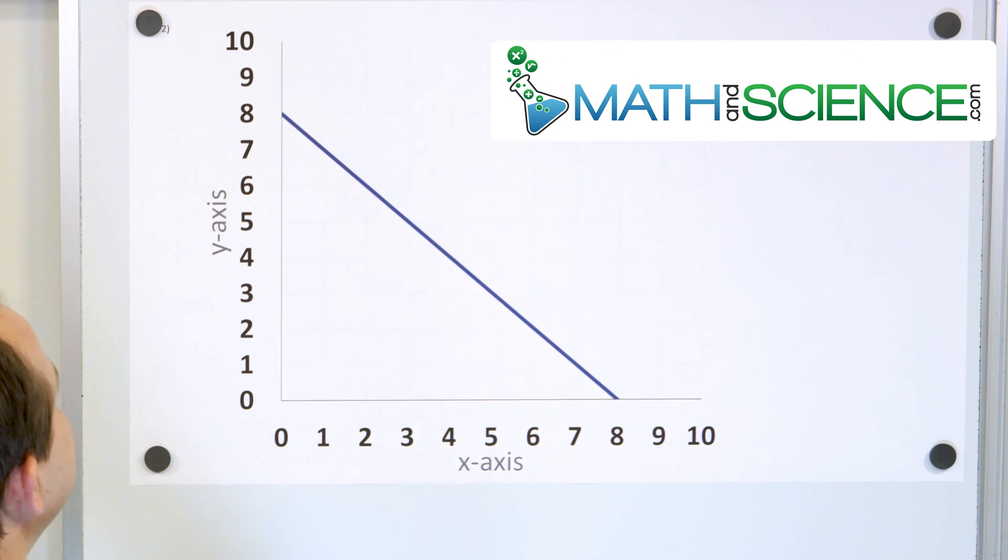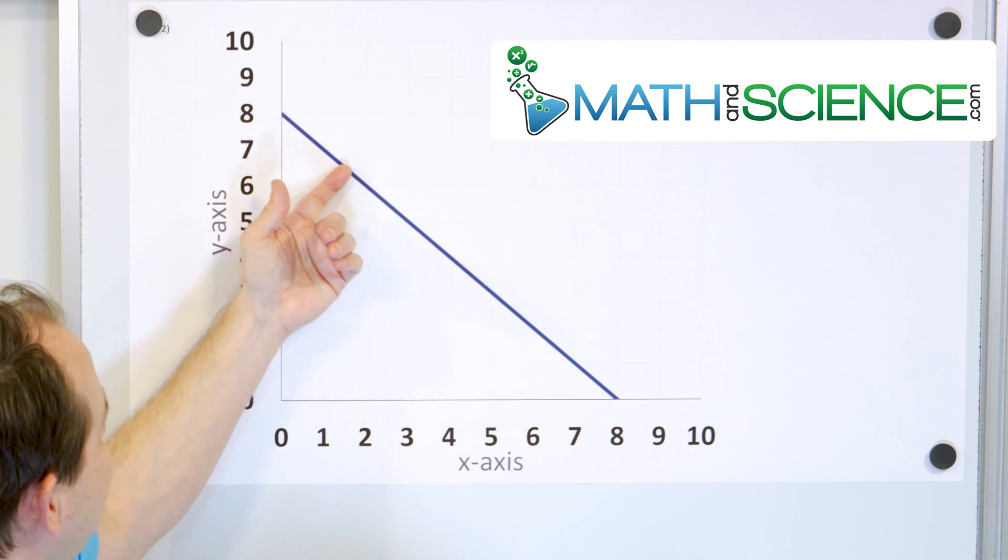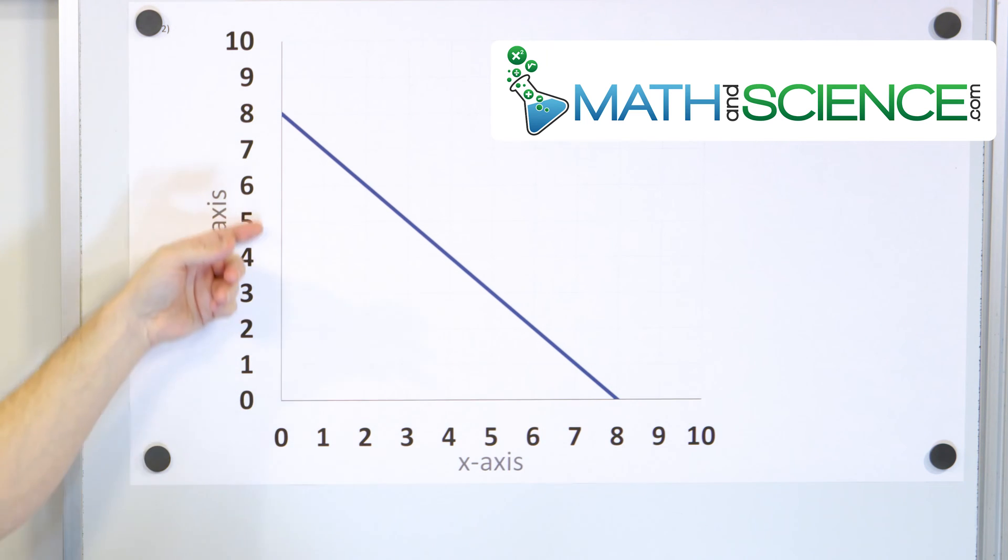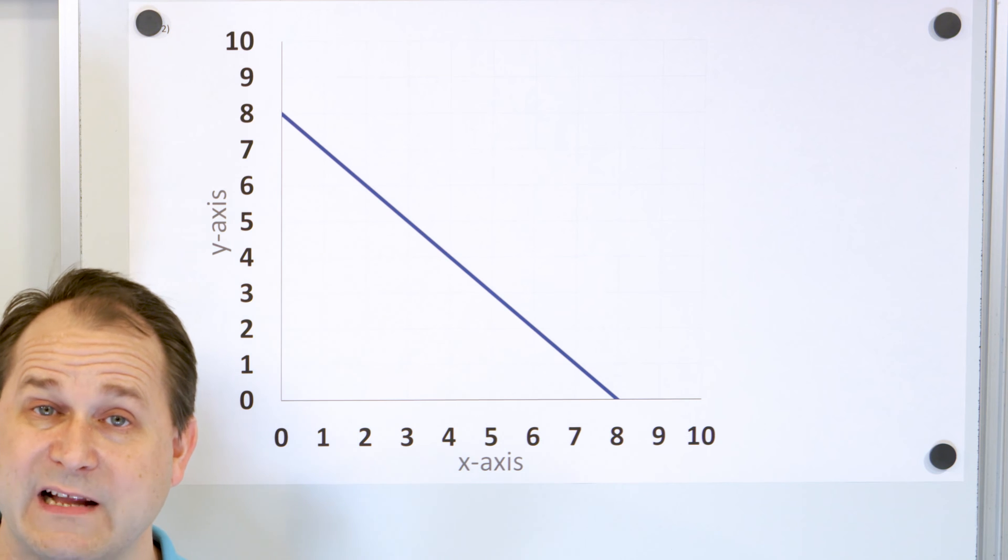Let's take a look at the first problem. Here is a graph. Nothing's really labeled, but I do know that the graph goes through these points. Here's x, here's y, and I want you to tell me what is the equation of this line.